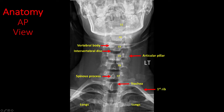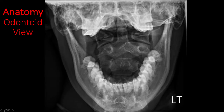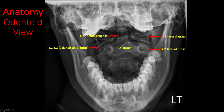Identify the soft tissues, lungs, and ribs. In the open mouth or odontoid view, first identify the C2 vertebral body and the odontoid process. Identify the C1 and C2 lateral mass. The joint space between them is known as the atlanto-axial joint or C1-C2 joint. Identify the mandible.